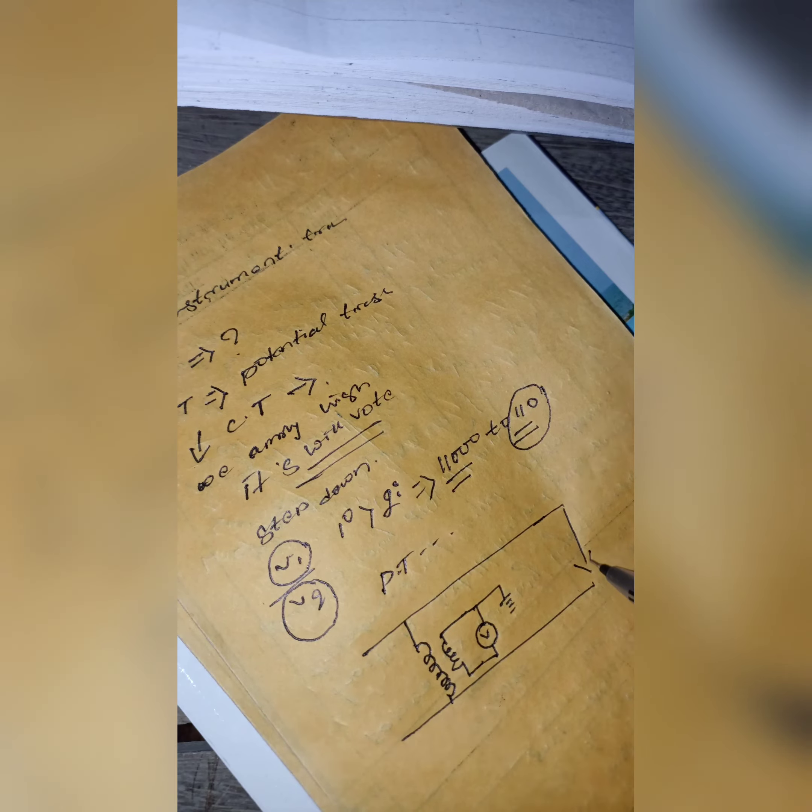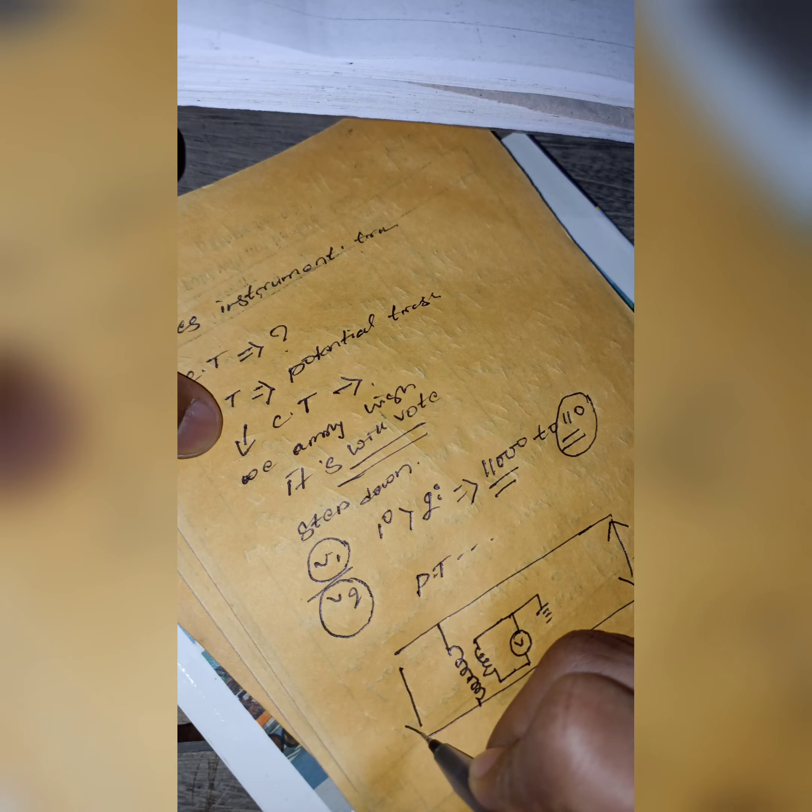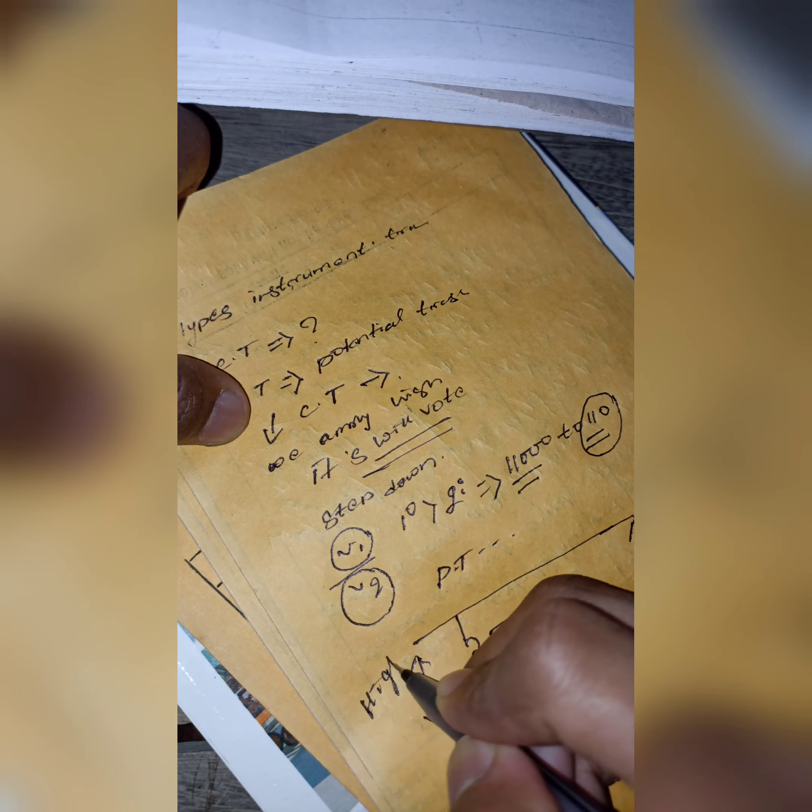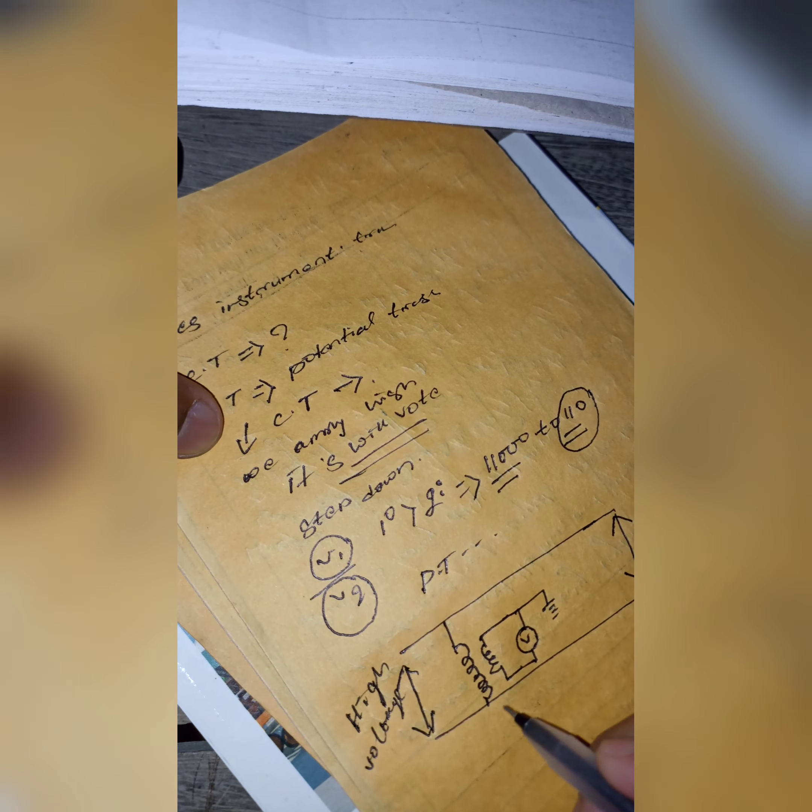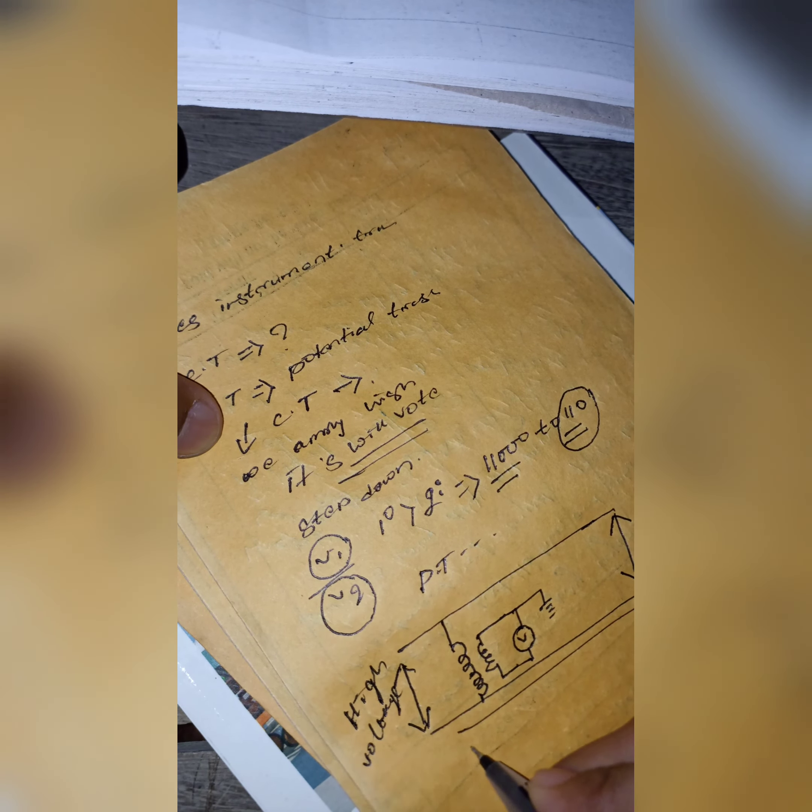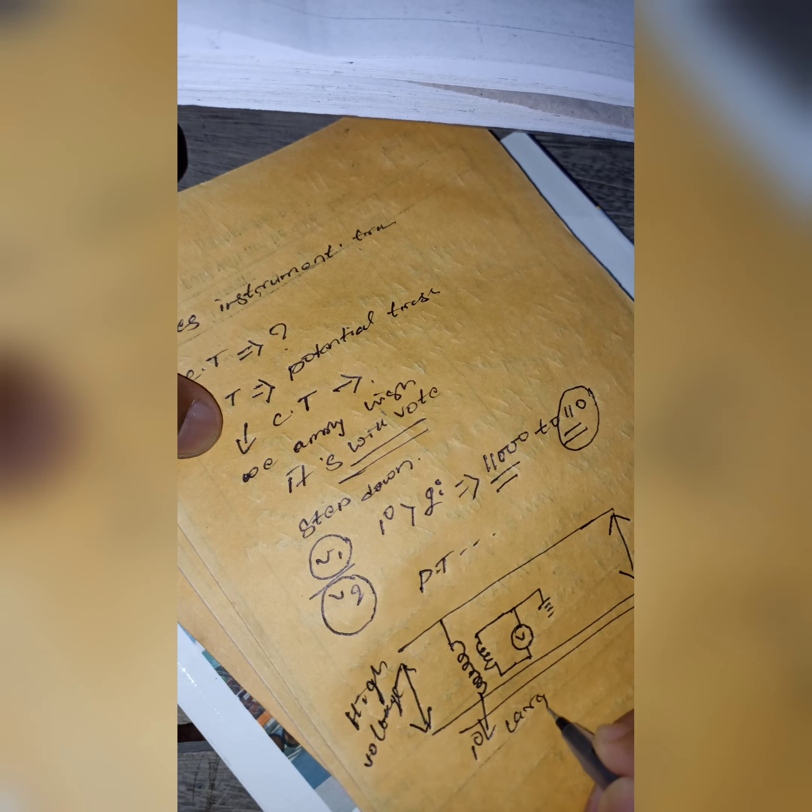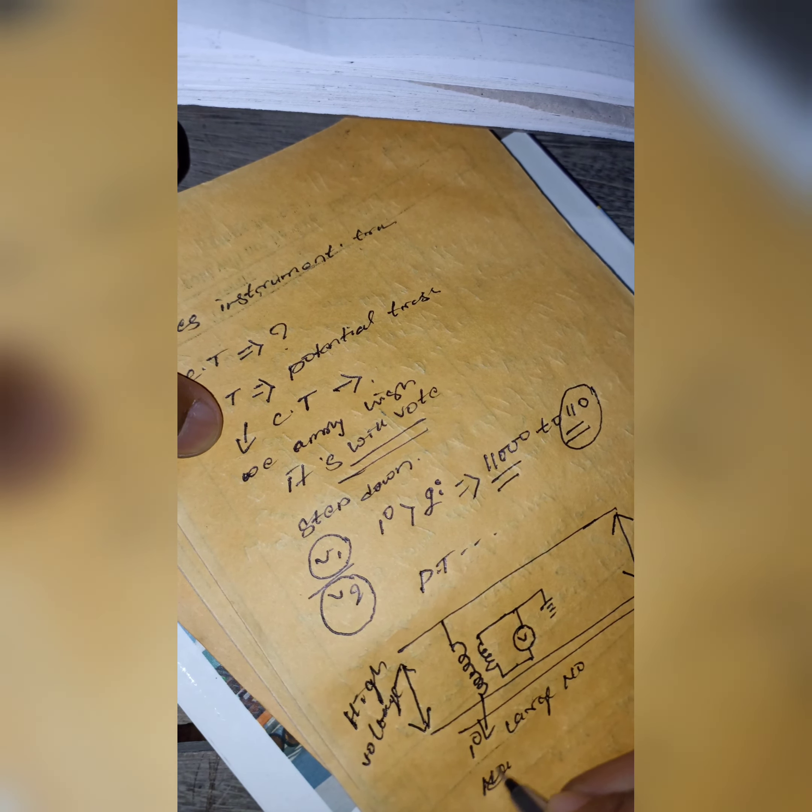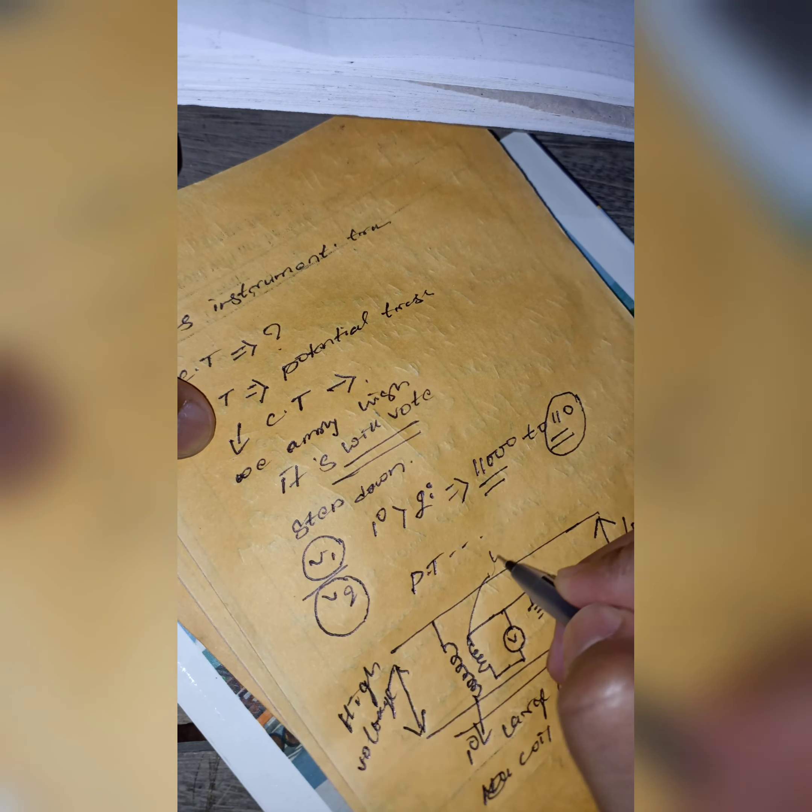From the figure you can clearly know that this is a step down transformer because primary side has large number of coil turns and secondary side has low coil turns.